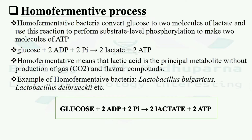In the homofermentative process, homofermentative bacteria convert glucose to two molecules of lactate and use this reaction to perform substrate-level phosphorylation to make two molecules of ATP. Substrate-level phosphorylation is a reaction where ATP molecules are produced. The overall reaction is: one glucose molecule plus two ADP molecules plus two inorganic phosphates yields two lactate molecules and two ATP molecules. Lactic acid is the principal metabolite without production of CO2 gas or flavor compounds.